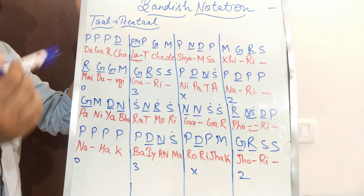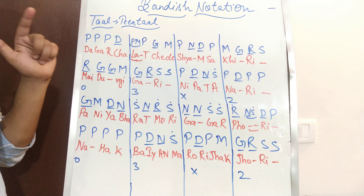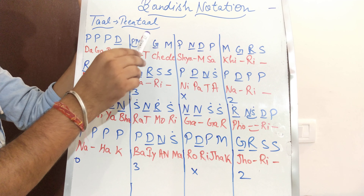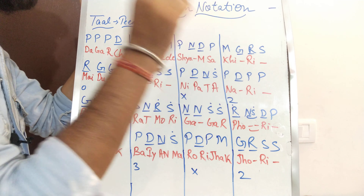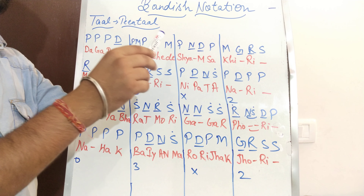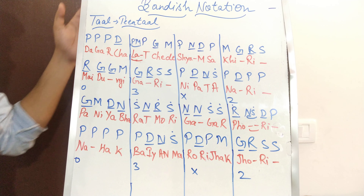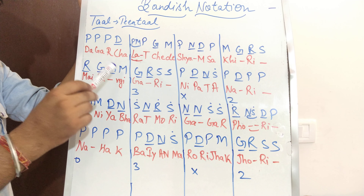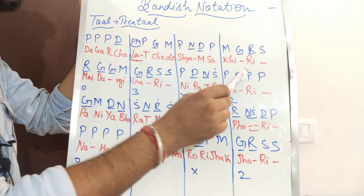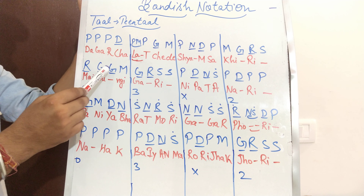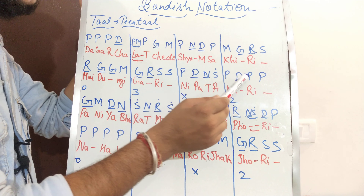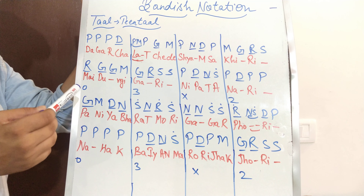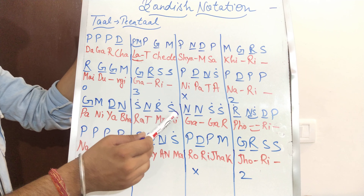Now coming to the point: Papa Padha Pamapa Gama — there is a Dugun here. I have checked it again. Papa Padha Pamapa Gama, Pani Dha Pa Maga Resa. Again Papa Padha. There is also a change Harry — you can note it: Rega Gama Gama Gare Sasa Padha Nisa Padha Papa.